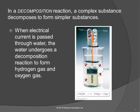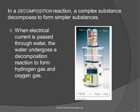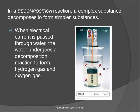In a decomposition reaction, the opposite happens — you have one compound that decomposes. Here's an illustration of a very simple apparatus: a 9-volt battery in a cup of water. The electric current causes the water to decompose; you started out with H₂O and the electric current causes it to decompose into oxygen gas and hydrogen gas. So one reactant, two products.